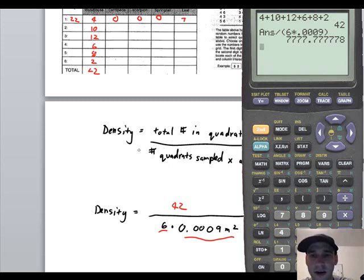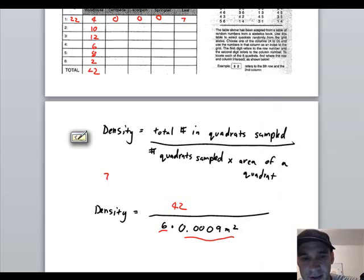That would give me a density of 7,777. And the unit for that is going to be number per meter squared.